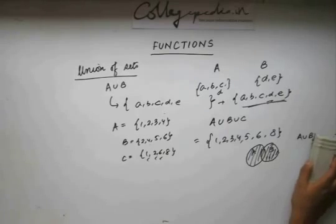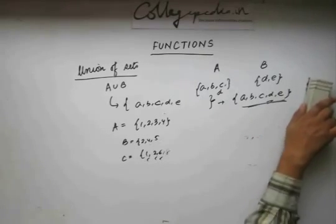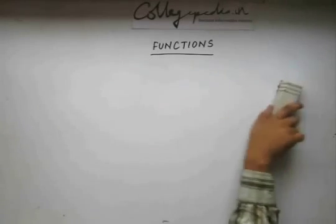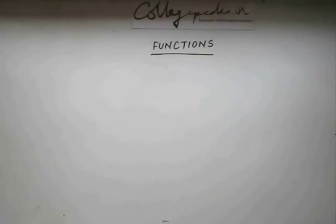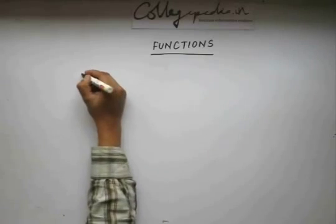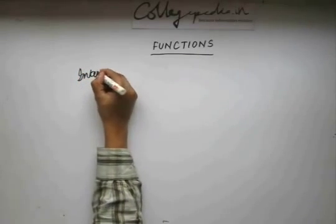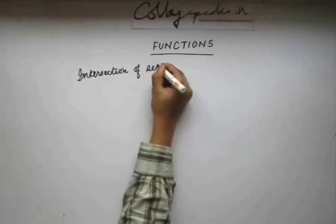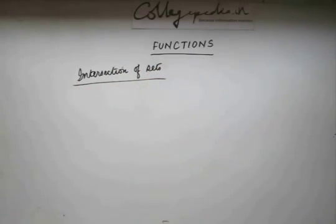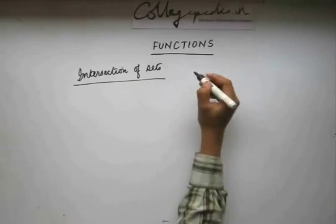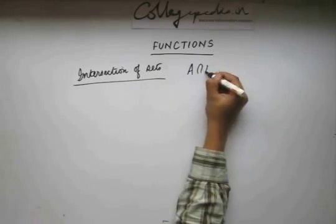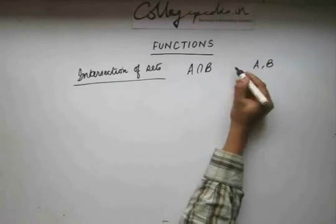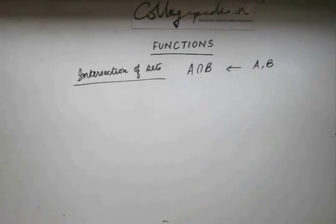Similar to union of sets, we have intersection of sets. Intersection of a set is denoted by A intersection B. If I have two sets A and B, then the intersection of sets is denoted by A intersection B.